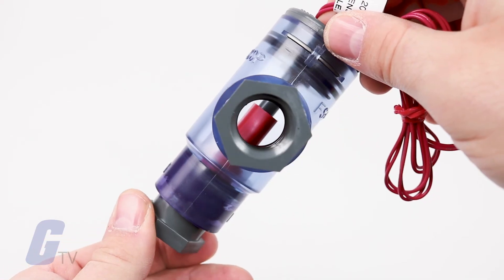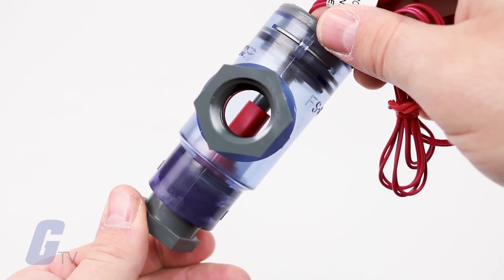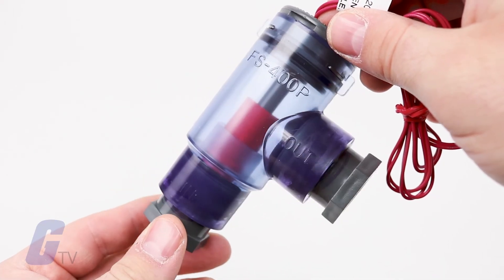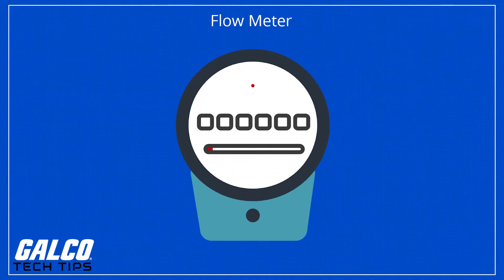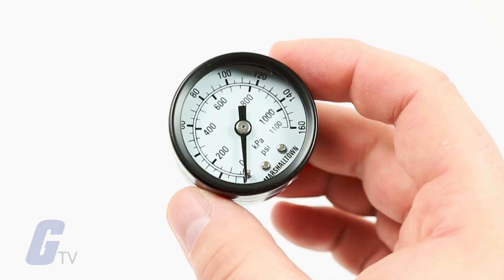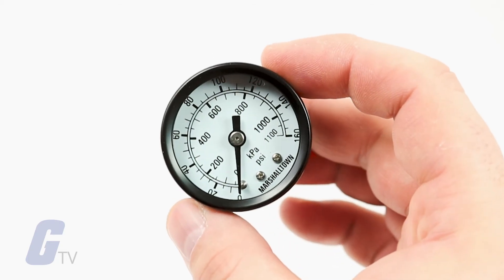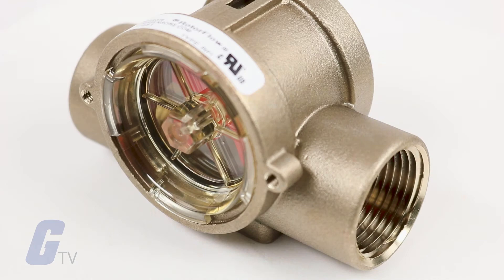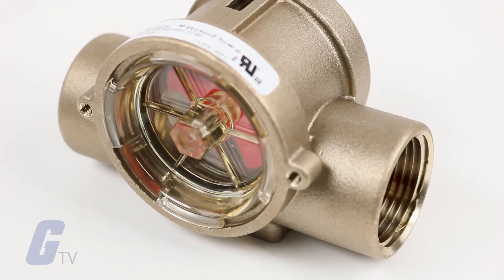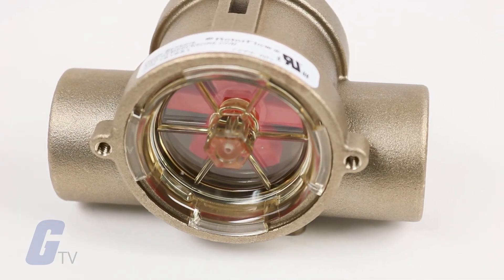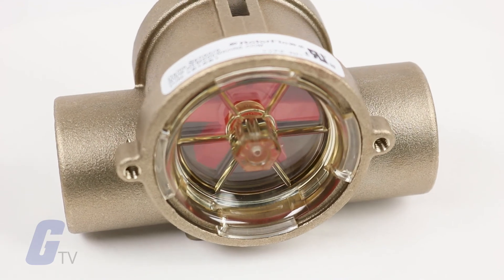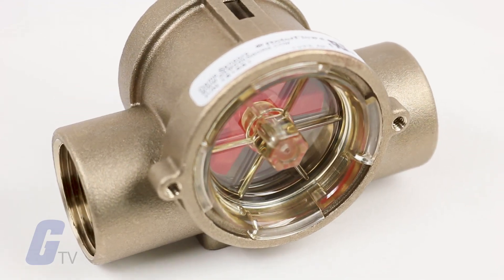Flow sensors are devices that are used to measure the flow rate of something, typically a fluid. These sensors are often part of a larger device, such as a flow meter. Similar devices are also available for air and gas measurement, but flow sensors are commonly used in various applications including industrial processes, HVAC, and more.